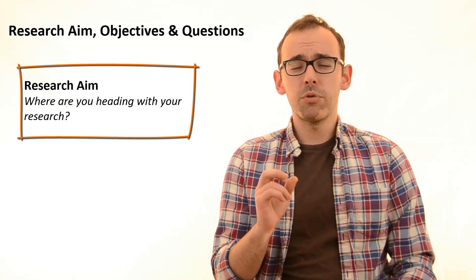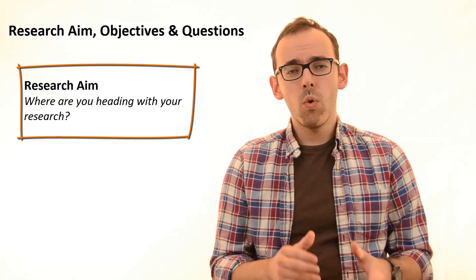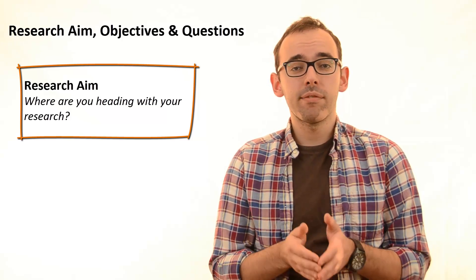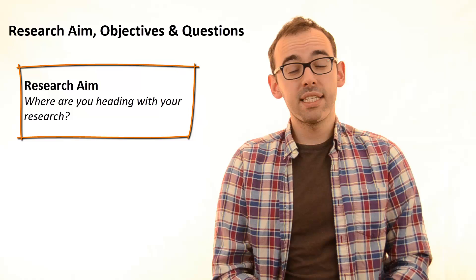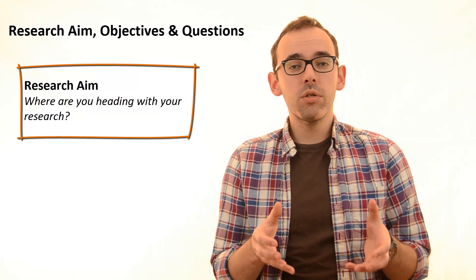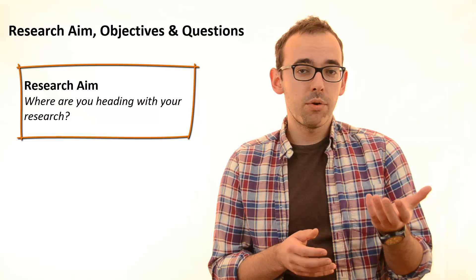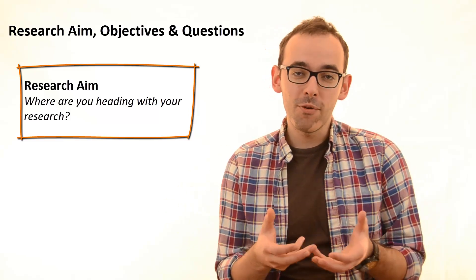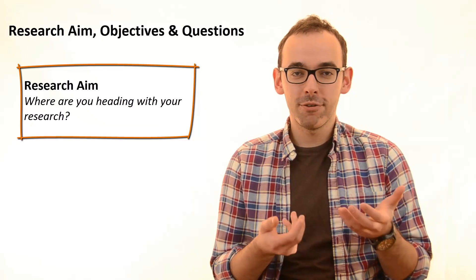In this part, you should clearly say what your research is going to achieve, where you are heading with your research. Inside this research aim part, we are going to write either research objectives or research questions or both of them, and this is where there is a lot of confusion.